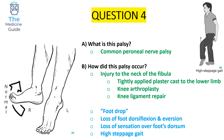A helpful way to remember the high steppage gait is to think of the way Beyoncé walks on stage — that strut captures the exaggerated knee lift. A common peroneal nerve palsy arises from injury to the neck of the fibula, which may be due to a tightly applied plaster cast to the lower limb, knee arthroplasty, or iatrogenic injury following knee ligament repair.